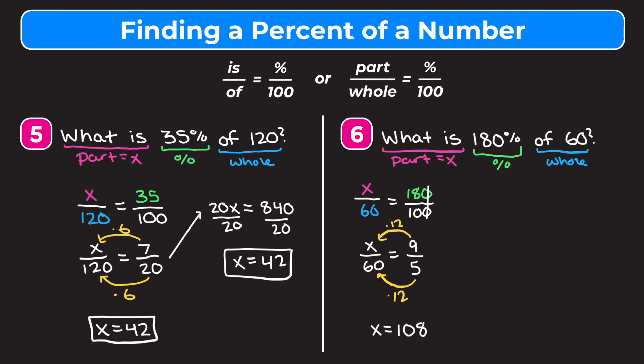Checking: 180% is more than 100% but less than 200%. 100% of 60 is 60, and 200% of 60 is 120. So our answer should be between 60 and 120 but closer to 120. 108 is between 60 and 120 and definitely closer to 120, so our answer makes sense. Using cross multiplication: 5X equals 60 times 9, which is 540. Dividing by 5 gives X equals 108.